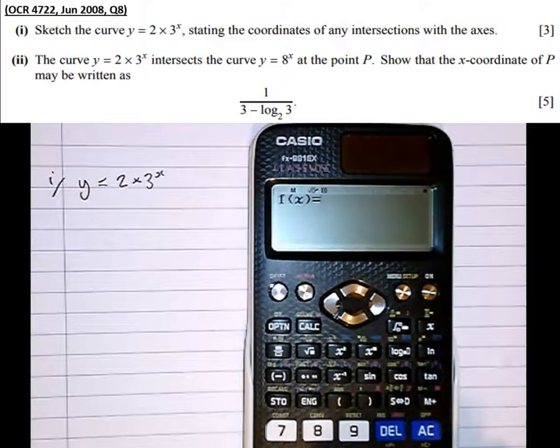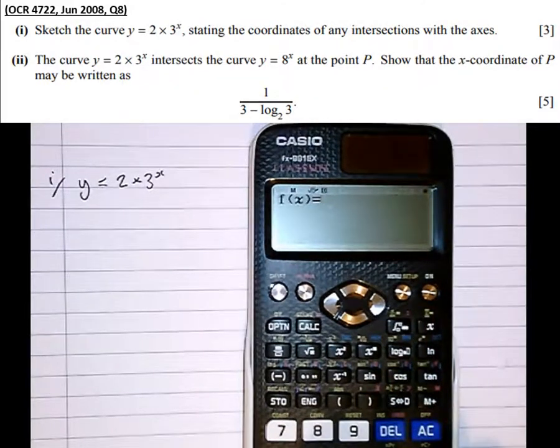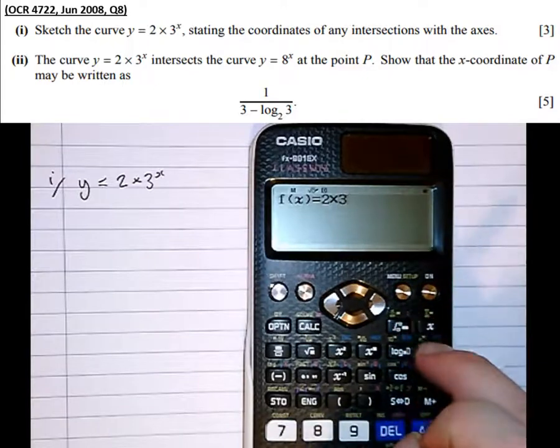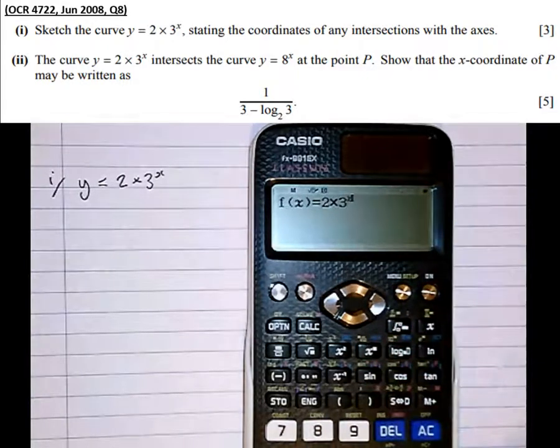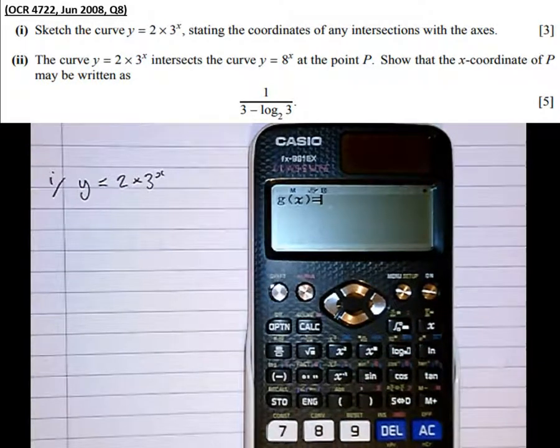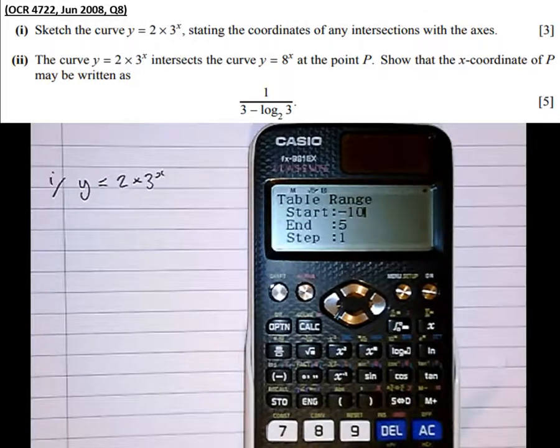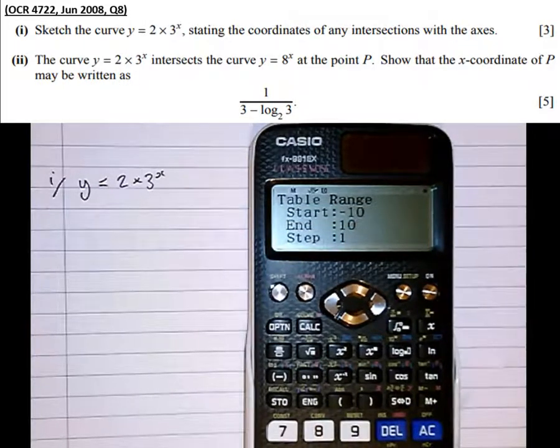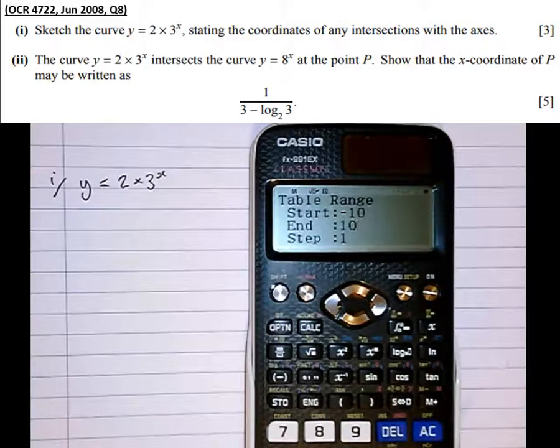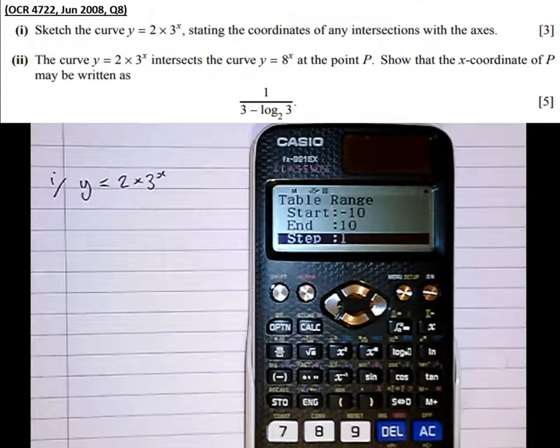For f of x, we're going to input that equation into the calculator: 2 times 3 to the power of x. Press equals to input it. It's given us the option to enter a second function, but we're not going to do that. We're going to start at minus 10 and go all the way up to 10 just to get a rough idea of what this graph looks like. We're going to step in 1, which means the gap between x coordinates is 1.